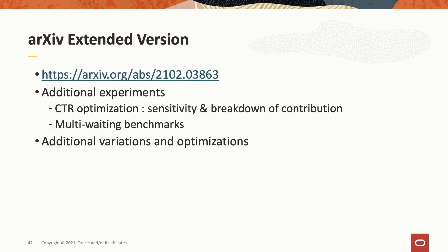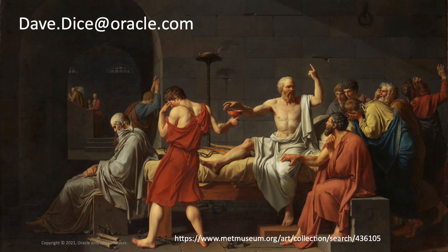You can find an extended version of the SPAA paper in arXiv. The arXiv form contains data on additional experiments — for instance, we looked at the CTR optimization and how much it contributes to performance. We also set up intentional multi-waiting scenarios to see how badly Hemlock performs in unfavorable circumstances, and describe additional variations and optimizations. Thank you for your time and feel free to contact me if you have any questions.